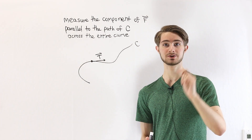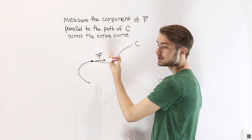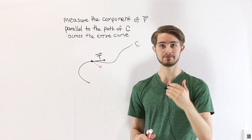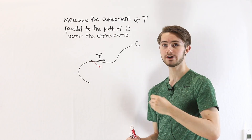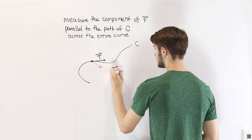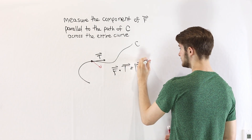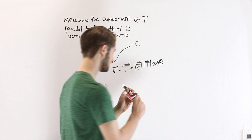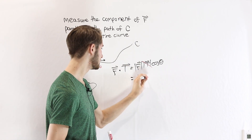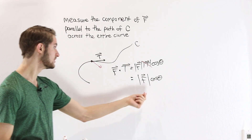I have a video on the unit tangent vector separately — you can check the link in the description for that. From here, the other relevant vector is the vector field evaluated at that point. The vector field is going to associate every point with a different vector. At this point, let's say that the vector field f gets evaluated to this red vector. If we want to measure the component of this vector f parallel to the unit tangent vector, we can use the dot product. If we take the vector field evaluated at this point dotted with the unit tangent vector, this is going to equal the magnitude of that vector field vector times the magnitude of the unit tangent vector times the cosine of the angle between them. Since the magnitude of the unit tangent vector is one, we just get the magnitude of the vector times cosine theta, which gives us a measure of how parallel that vector field vector is to the unit tangent vector.